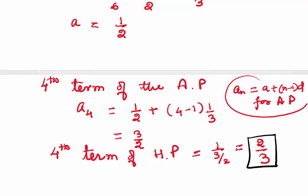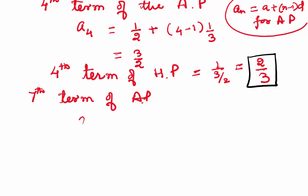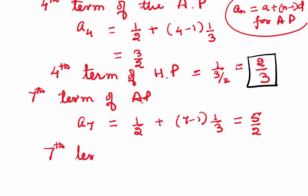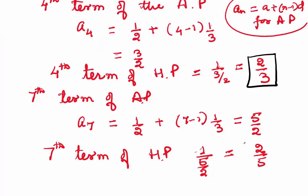Now for the seventh term of the AP: A7 = a + (7-1)d = 1/2 + 6*(1/3) = 5/2. So the seventh term of the HP is 1/(5/2) = 2/5.